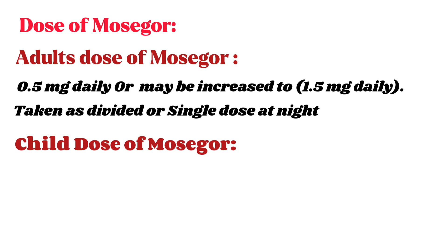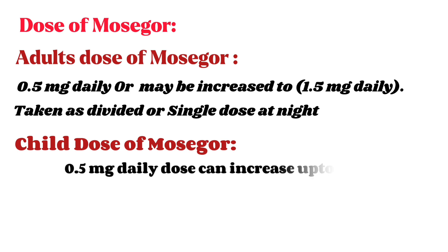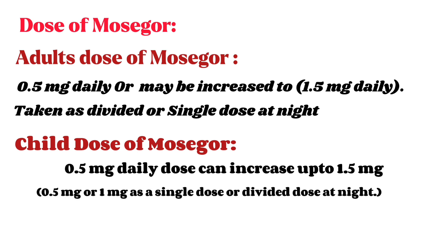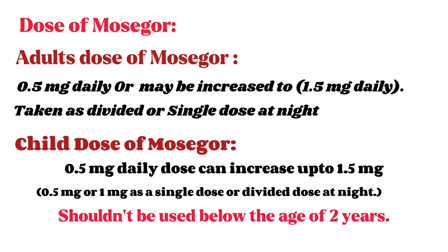Child dose of Mosegor: 0.5 mg daily; dose can increase up to 1.5 mg, or 1 mg as a single dose or divided dose at night. Should not be used below the age of 2 years.